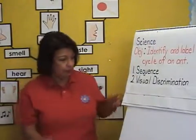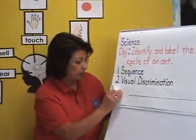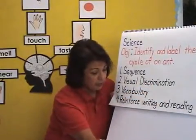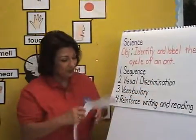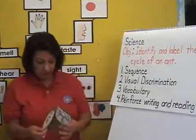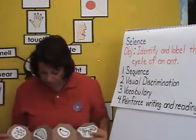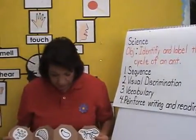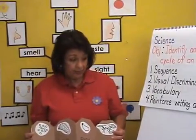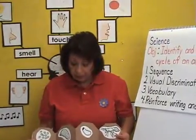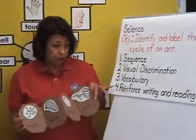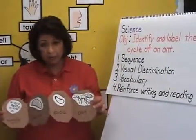Another skill that they will be developing is vocabulary. Because of the vocabulary that's in the book, they'll be able to know the names of each stage of the life cycle of an ant. And of course, because they'll be reading the words, we are reinforcing reading and writing.